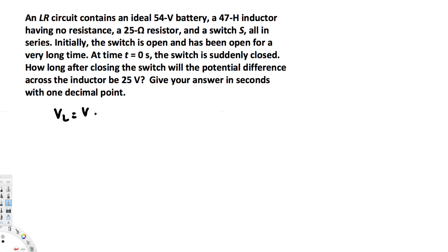To find this one, we can use this equation: V_L equals V times e to the power of negative R t over L. L over R is the time constant, but it flips around and goes to the top, that's how we got this negative R t over L.